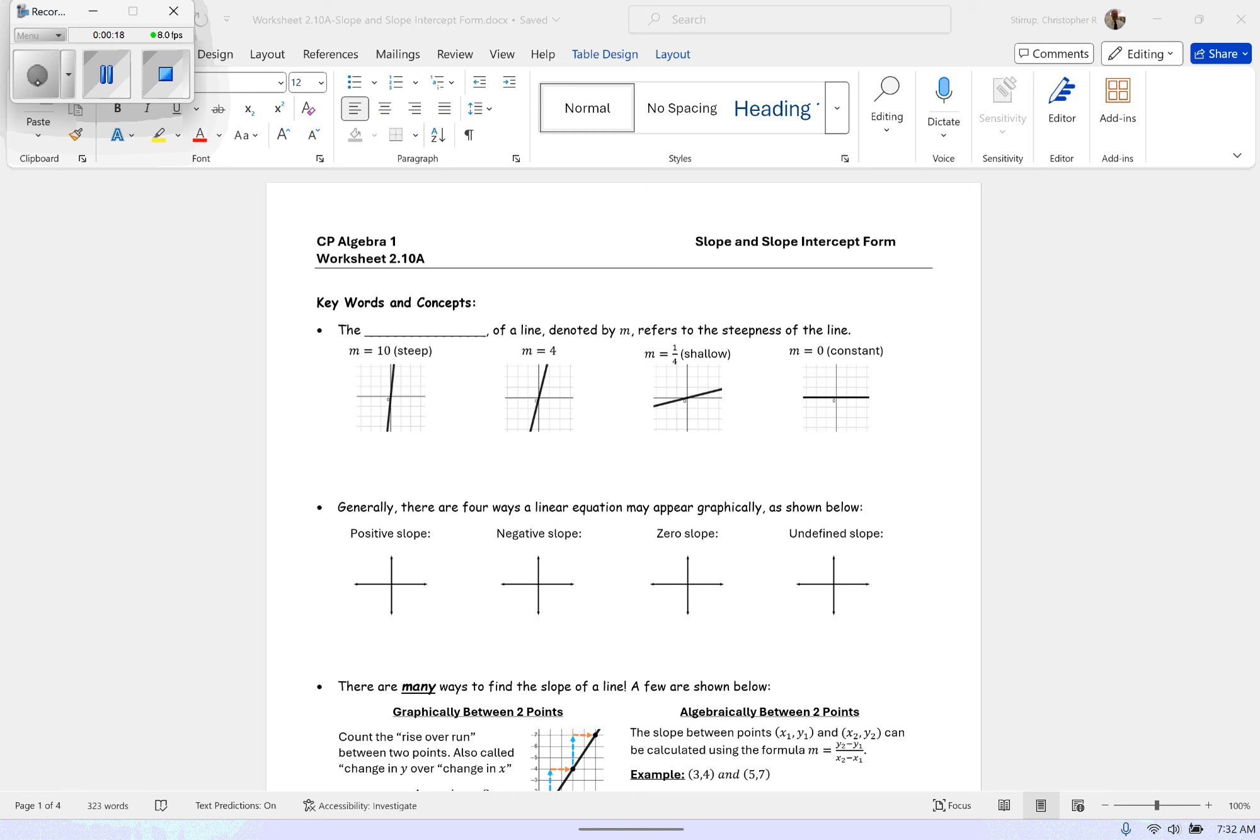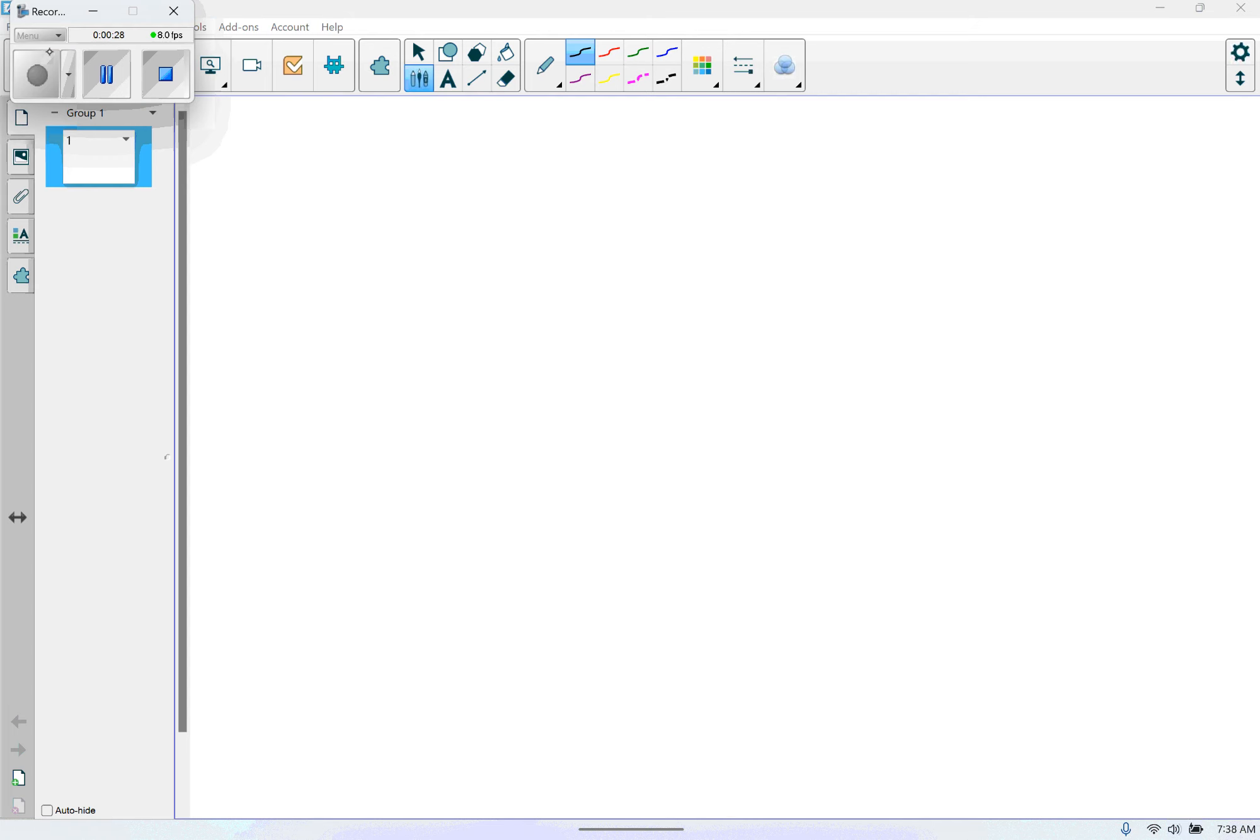So this is Worksheet 210A. The keywords: the blank of a line is denoted by M, refers to the steepness of the line. And that would be the slope of the line. They give us some values: M equals 10, M equals 4, M equals 1 fourth, and M equals 0.